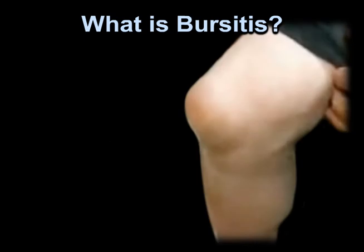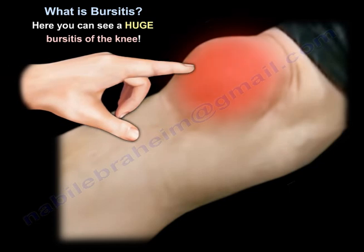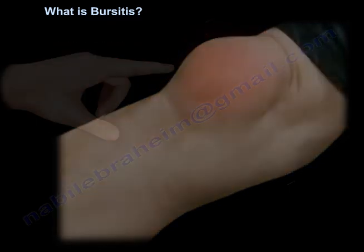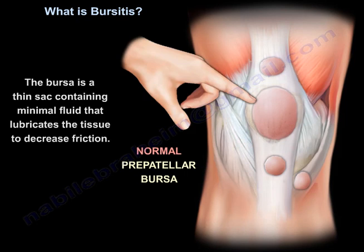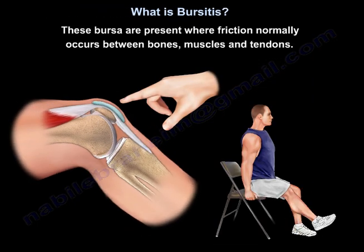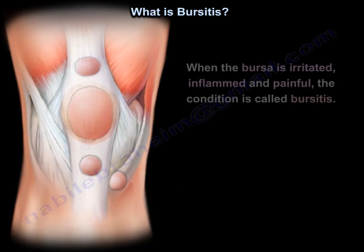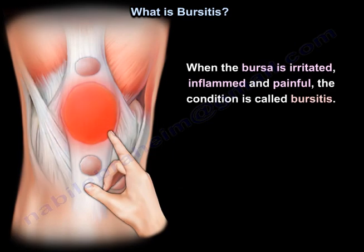What is bursitis? A bursa is a thin sac containing minimal fluid that lubricates the tissue to decrease friction. These bursa are present where friction normally occurs between bones, muscles, and tendons. When the bursa is irritated, inflamed, and painful, the condition is called bursitis.